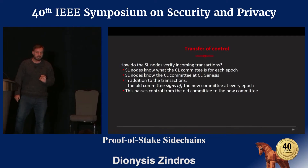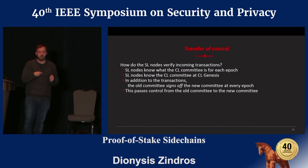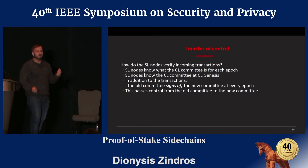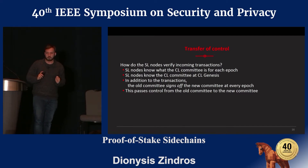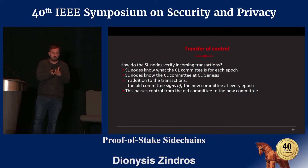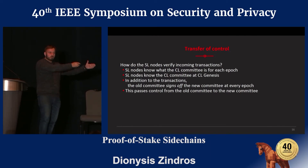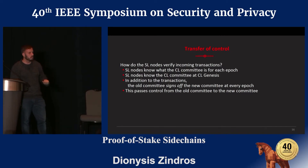The question is how the settlement layer knows who the correct committee is, since the stake on the computation layer evolves over time and the settlement layer miners don't know how that evolution has taken place. When the computation layer is first created, its genesis block has a certain stake distribution known to the settlement layer miners — that's the base of the induction. As epochs evolve, the elected committee that voted on which transactions took place also votes on a statement saying what the new committee on the computation layer is. The previous epoch's committee posts a certificate to the settlement layer once every epoch.